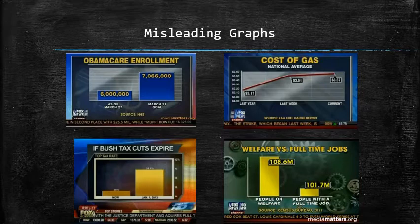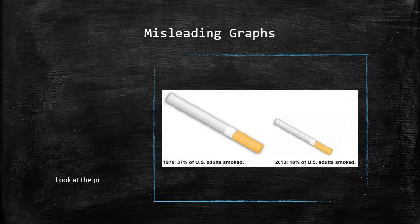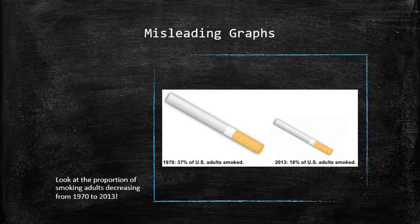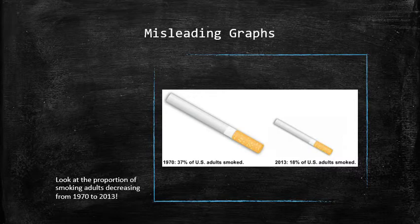Next we will discuss other ways in which graphs can be used to mislead. Look at the proportion of smoking adults decreasing from 1970 to 2013. While the proportion decreased by a factor of two, the problem is that when dimensions are increased or decreased by a factor of two, the area changes by a factor of four. So it appears the proportion decreased by a factor of four, which is not the case.